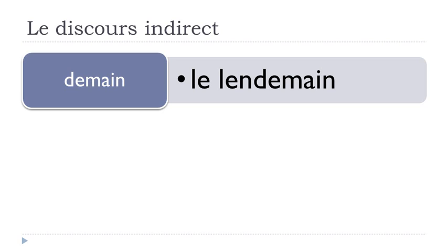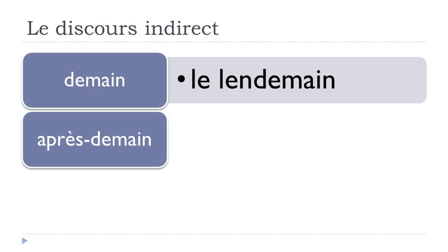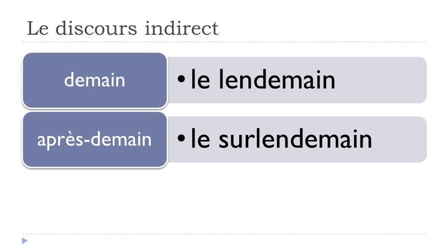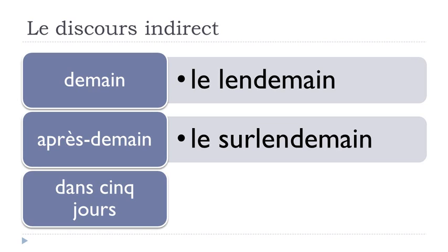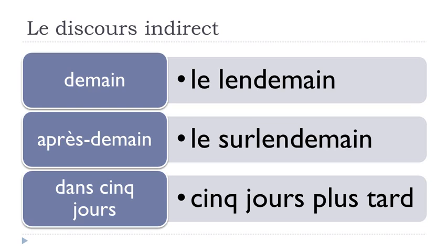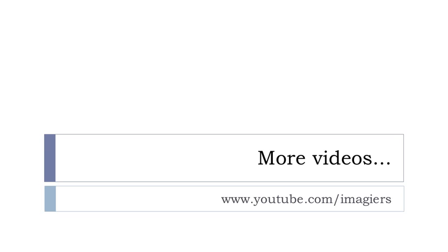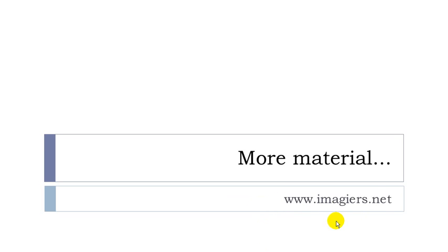Demain — tomorrow — becomes le lendemain, the following day. Après-demain — the day after tomorrow — becomes le surlendemain. Dans cinq jours — in five days — becomes cinq jours plus tard, five days later. That was simple and short. If you want more videos, go to youtube.com/Imagier and the website imagier.net is waiting for you. Have a great day, bye bye.